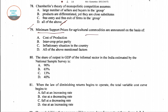Question number 79: Minimum support price for agricultural commodities are announced on the basis of — with four options: cost of production, inter-crop price parity, inflationary situation in the country, and all of the above. Option C is the right answer — minimum support price for agricultural commodities are announced on the basis of inflationary situation in the country.